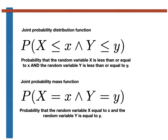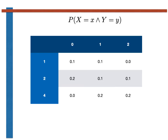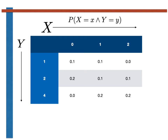If we want to provide information on the joint probability mass function, we put it in a table such as the one shown here. The column headings indicate the values that X can take, and the row headings indicate the values that Y can take. The values of the joint PMF are in the body of the table — for instance, 0.2 is the probability that X equals zero and Y equals two.